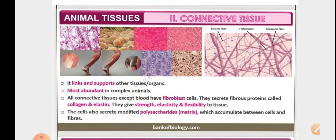Matrix is basically composed of polysaccharides, that's glycoprotein, and is secreted by the tissue cells.